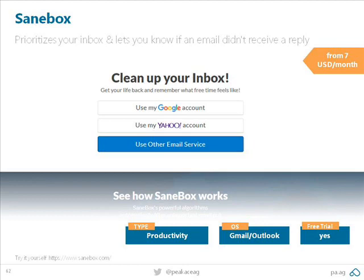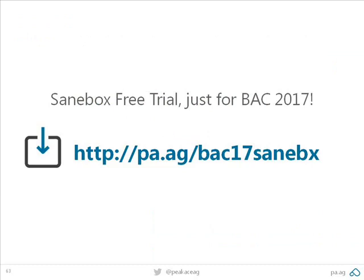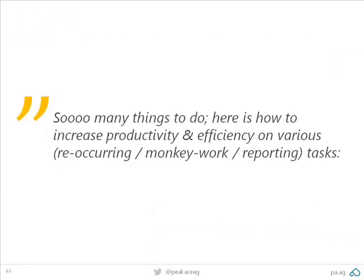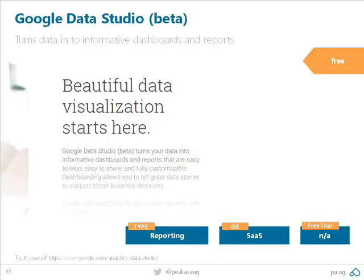Boomerang is a bit buggy with the newest Outlook, so my current favorite for everything is called SaneBox. It takes everything - mail tracking, follow-ups, to-dos - all in one tool. If you want to do one tool and be more efficient, this is nuts. Seriously, it's seven dollars a month.